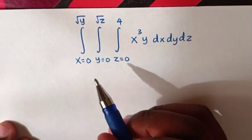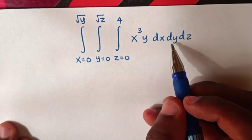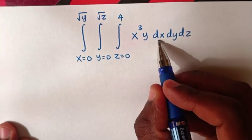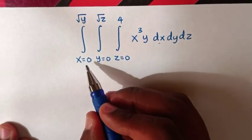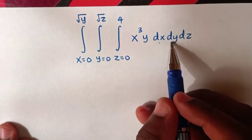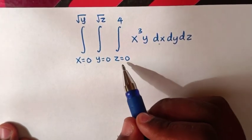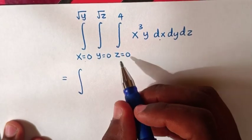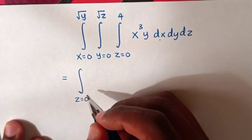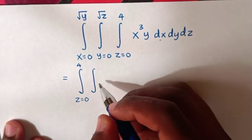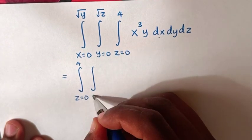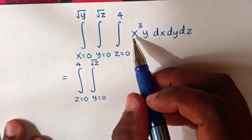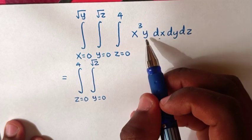How to integrate the integral of x³y dx dy dz within these limits. We will start by integrating with respect to dx first, then with respect to dy, and then with respect to dz. The outer integral is with respect to dz from z equals 0 up to 4, then with respect to dy from y equals 0 up to square root of z, and then with respect to dx — x³ with respect to dx.